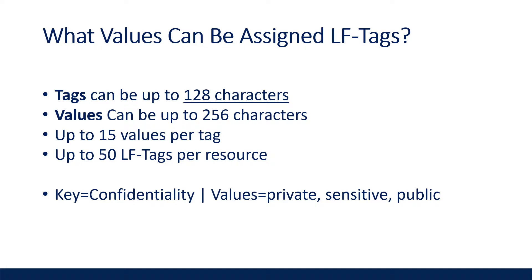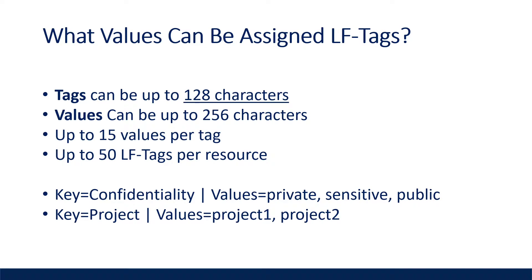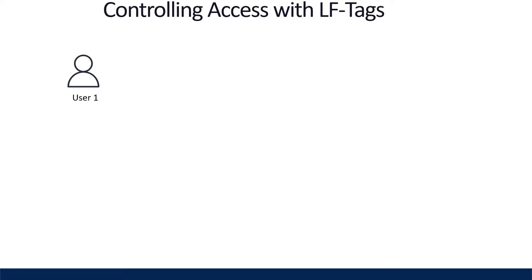For example, a key could be 'confidentiality' with values being 'private,' 'sensitive,' and 'public' — useful when you don't want everyone to have access to all tables or columns. You might also want to manage your data by projects, so a key could be 'project' with values like 'project one' and 'project two,' ensuring that only specific team members have access to tables related to specific projects.